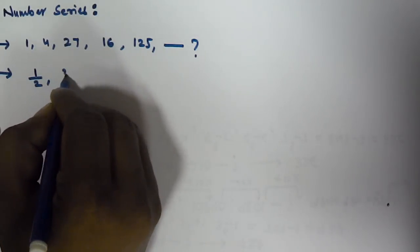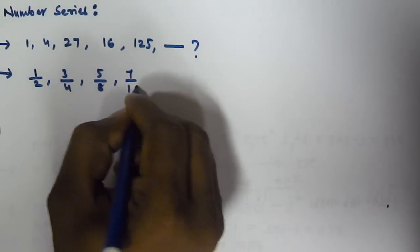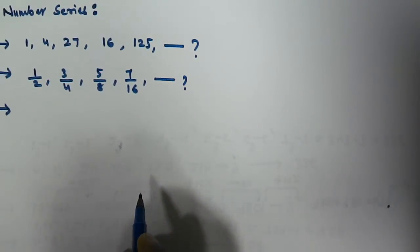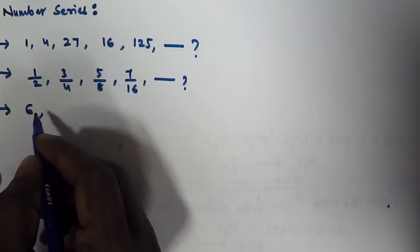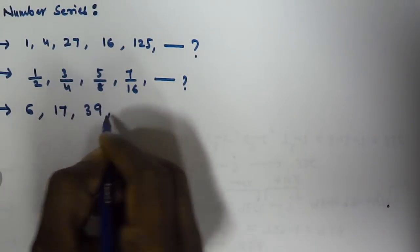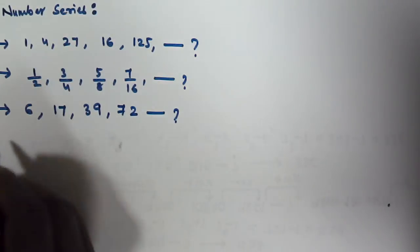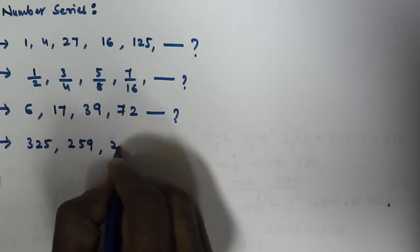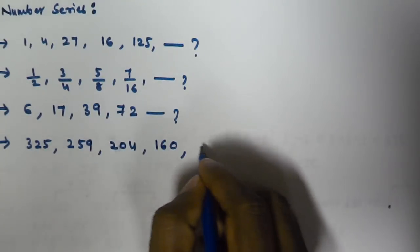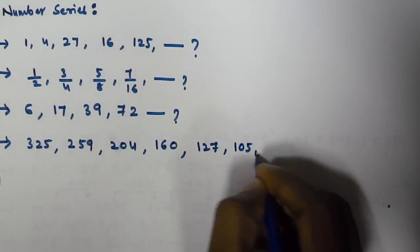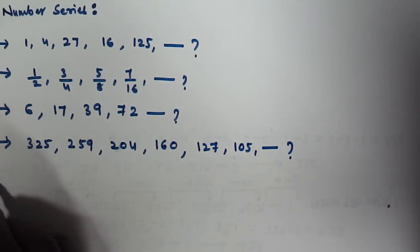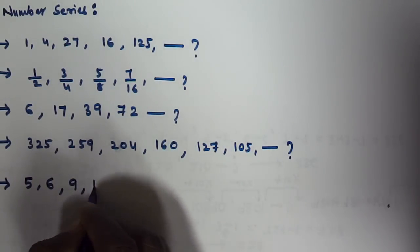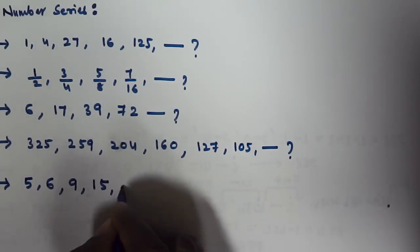The second problem: 1/2, 3/4, 5/8 and 7/16 — what comes next? The third problem: 6, 17, 39, 72 — what comes next? The fourth problem: 325, 259, 204, 160, 127, 105 — what comes next? And the next problem is 5, 6, 9, and 15 — what comes next?